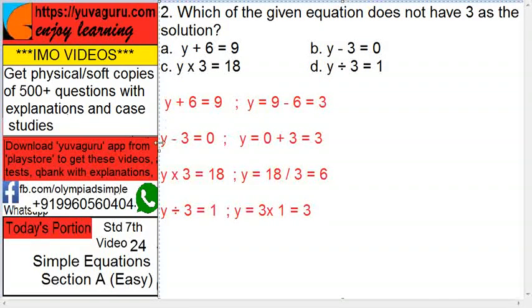Second one, y minus 3 equals 0. Take 3 on this side, so it becomes y equals 0 plus 3, that is 3. So again not required.